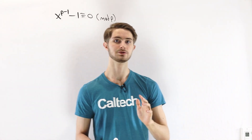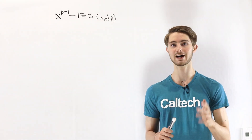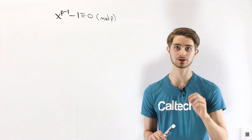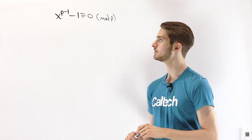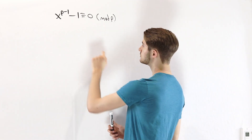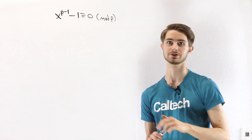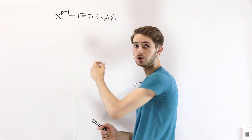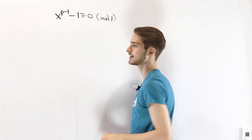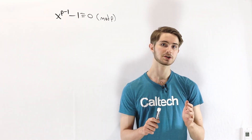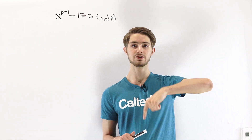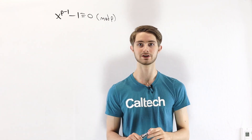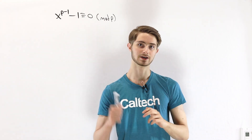We are going to talk about primitive roots and prove that every prime number has at least one primitive root. To do that, we're going to use something called Lagrange's theorem, which has to do with the number of solutions to polynomial congruences — congruences where we're looking at a polynomial in some variable like x. If you aren't familiar with Lagrange's theorem, there's a video linked in the description that explains it and goes through a derivation, so you can check that out and then come back here.